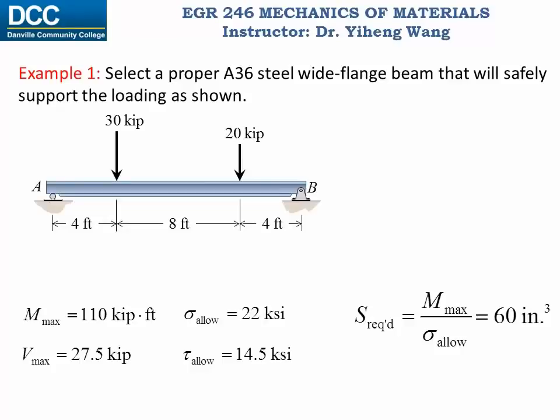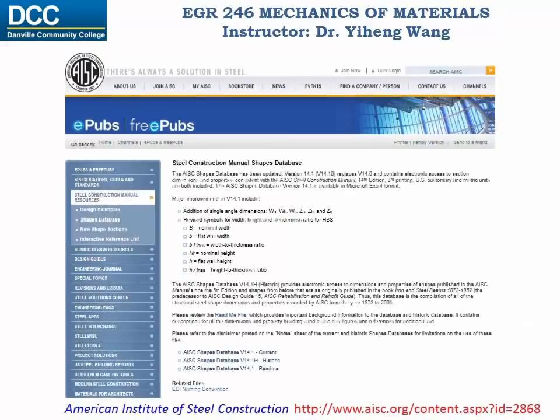The question now is how do we use this information to guide us in the selection of the proper beam. For that we can refer to handbooks, brochures from manufacturers, or online databases. For example, a database can be downloaded from the website of the American Institute of Steel Construction, and this database includes the detailed specifications of almost 2000 steel construction shapes.